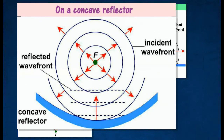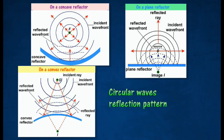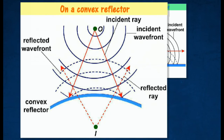Circular waves on a concave reflector: the waves are reflected as plane waves. The reflected wave energy is in the direction of the ray perpendicular to the plane wave fronts. Circular waves on a convex reflector: the waves are reflected as circular waves which appear to diverge from the virtual image I.